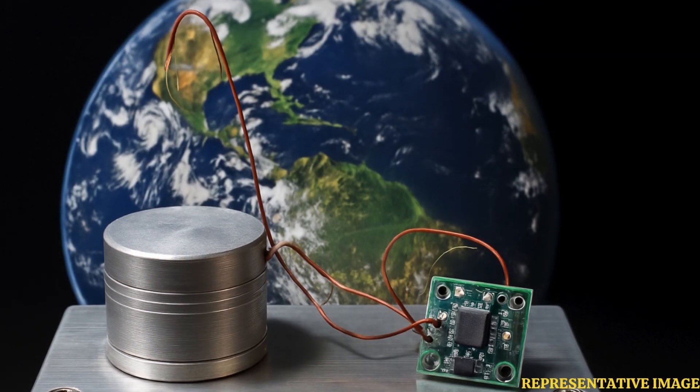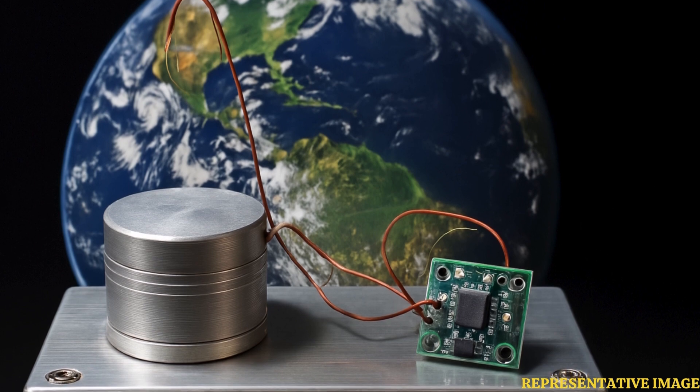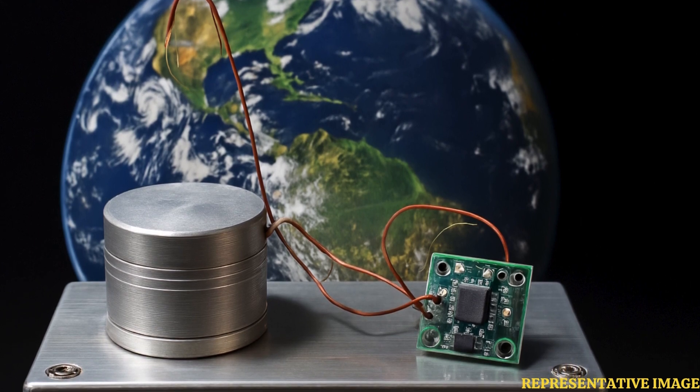Scientists have figured out a method to generate electricity from Earth's rotation. A device developed by scientists from Princeton University and NASA's Jet Propulsion Laboratory can create tiny amounts of electricity by leveraging Earth's movement.